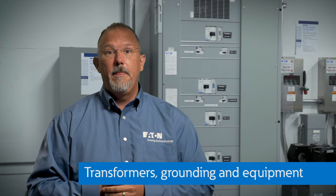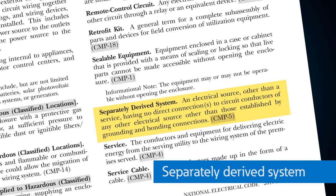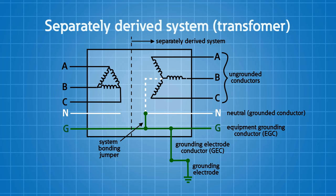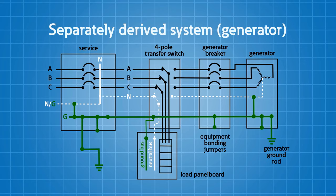Now we're going to move to transformers and grounding and bonding inside transformers — specifically the separately derived system. This is an electrical source, other than a service, having no direct connections to circuit conductors of any other electrical source other than those established by grounding and bonding connections. A common example is a delta-wye grounded transformer in a power distribution system: there is isolation between the primary and the secondary, establishing a separately derived system on the secondary. With a generator, you'll typically see people drive a ground rod next to it and bond the enclosure to that ground rod — if they also connect the neutral to that enclosure inside the generator, they're establishing a separately derived system.